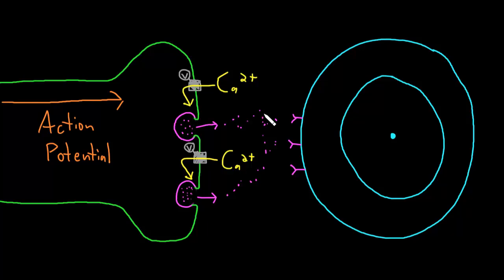There will be lots of neurotransmitter now in the synaptic cleft where there wasn't before. I've drawn this too large — it's actually a very small distance — so the neurotransmitter has no problem diffusing across and binding to its receptor on the postsynaptic membrane of the target cell.